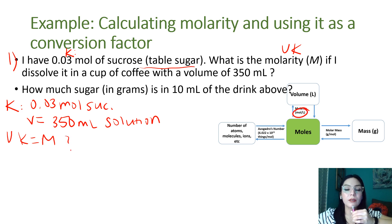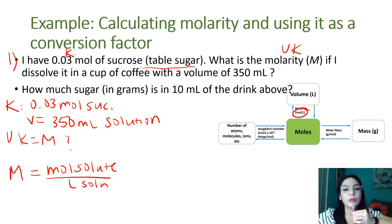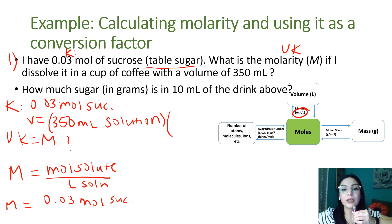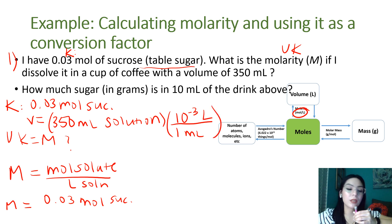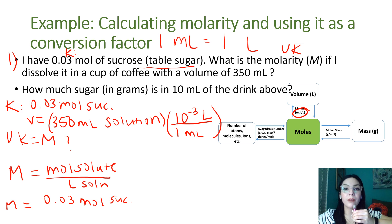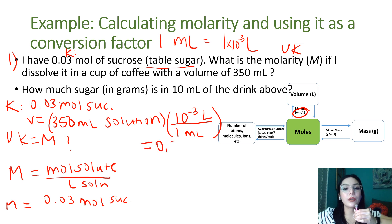We know molarity is moles per liter, so we plug and chug. We have 0.03 mol sucrose, but we first need to convert 350 mL to liters. Using prefix multipliers, 1 mL = 10⁻³ liters, so 350 mL = 0.350 liters. Then we take moles divided by liters to calculate molarity.